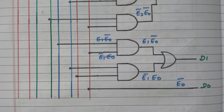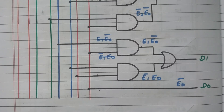In this video, we discussed how to convert XS3 code to BCD code. We covered the truth table, followed by simplification of Boolean functions using the K-map, and that simplified expression was implemented with logic gates. Subscribe the channel for more videos and notifications. Soft copy of this material is available in the drive — the link is given in the description box. Thank you for listening.